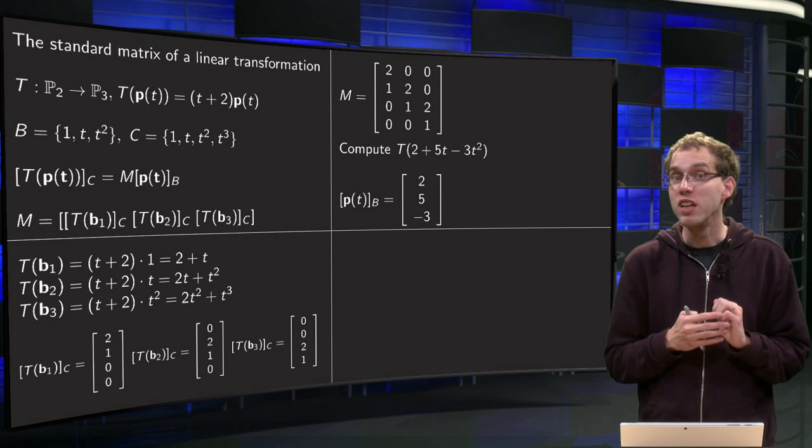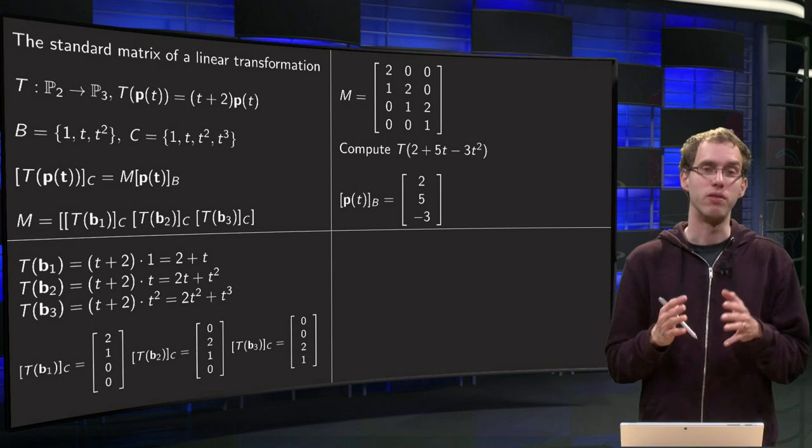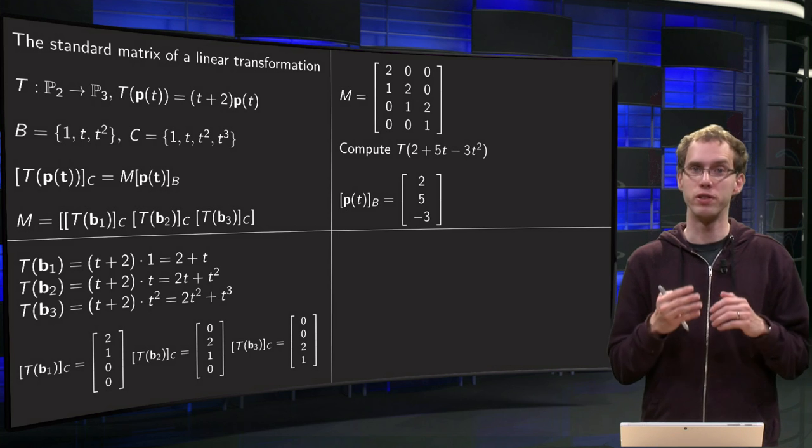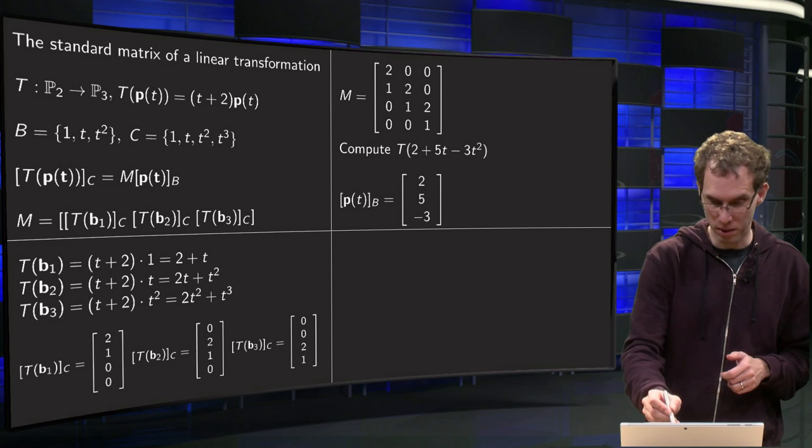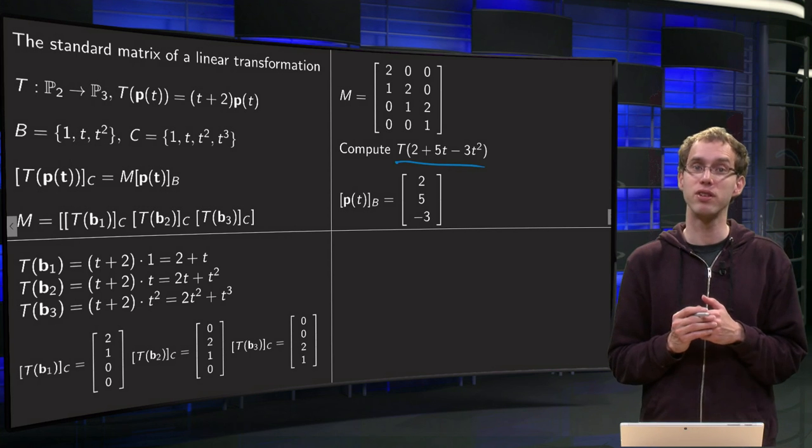And well how can we use this M matrix? If you want for example, easiest example if you want to compute the image of some polynomial in P2. Like the image of 2 + 5t - 3t².